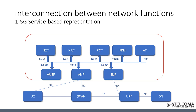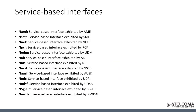You should note that the service-based architecture, or the SBA, explains the roles played by the different network functions based on their services. For the service-based interfaces, the name of the interface connecting any network function in the 5G core control plane is called 'N' followed by the name of the network function.